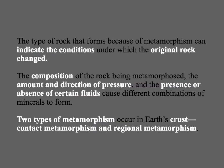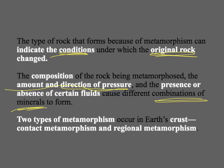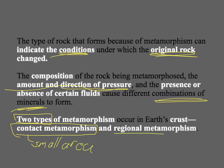The rock that forms from metamorphism tells us something about the conditions under which the original rock changed. We can look at a metamorphic rock and determine, based on the direction and amount of pressure, different combinations of minerals. We're going to look at two types of metamorphism: contact metamorphism, which occurs over a small area, and regional metamorphism, which occurs over a large area.